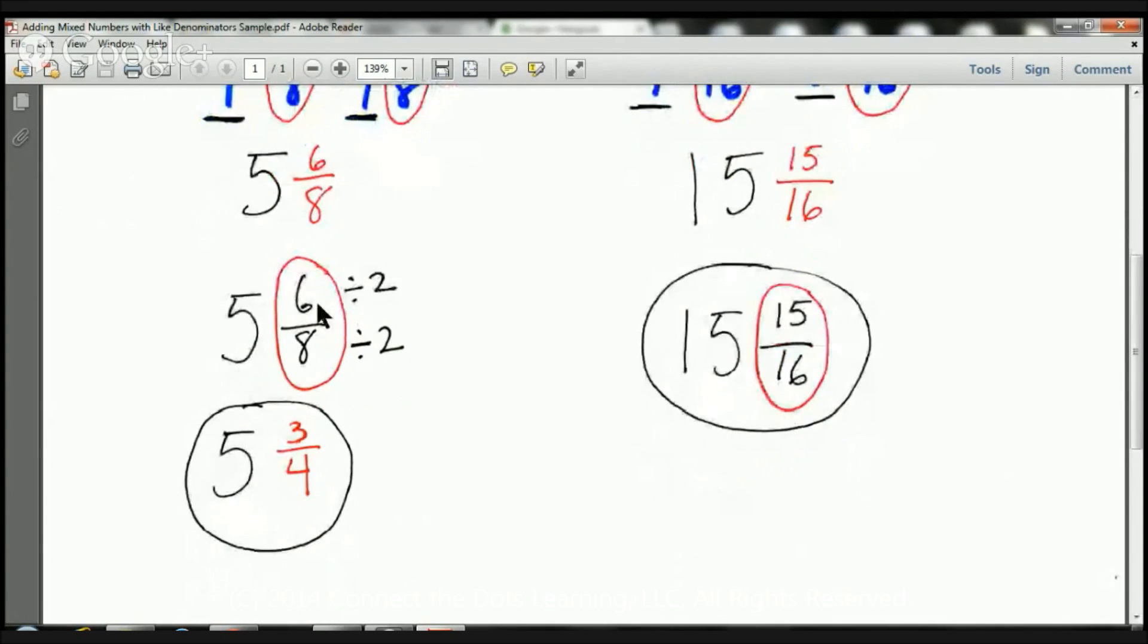The 6 and the 8 can both go into 2. 2 times 3 is 6, 2 times 4 is 8. So if they can both go into 2, they're both even numbers. Just know that if it's an even number it can always go into 2. Here I have two even numbers, a 6 and an 8.